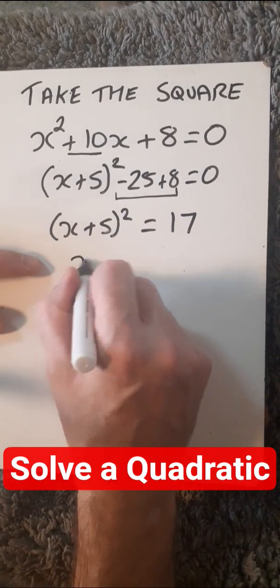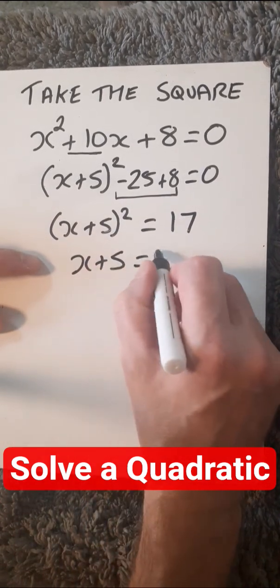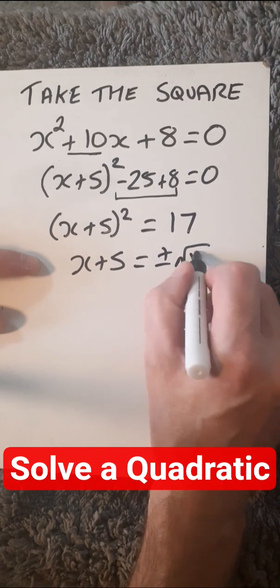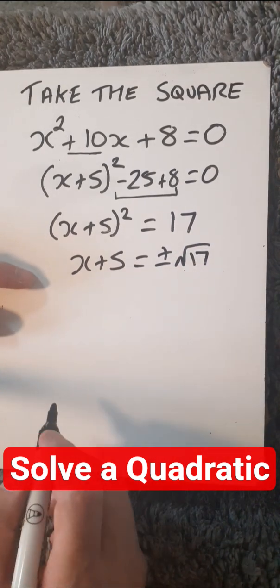Now, square root both sides. So, we've got x plus 5 equals plus or minus, don't forget the plus or minus, square root 17.